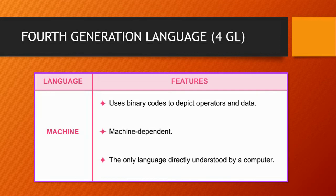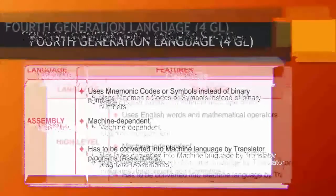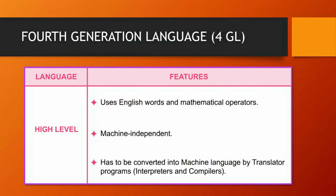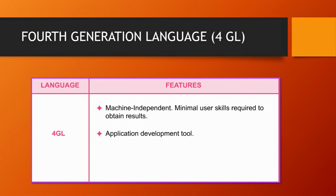Let us briefly sum up computer languages and their features. Machine language uses binary codes to depict operators and data; it is machine-dependent and the only language directly understood by a computer. Assembly language uses mnemonic codes or symbols instead of binary numbers; it is machine-dependent and must be converted by an assembler. High-level language uses English words or mathematical operators; it is machine-independent and converted by interpreters and compilers. 4th generation language is machine-independent, requires minimal user skills, and is used as an application development tool.